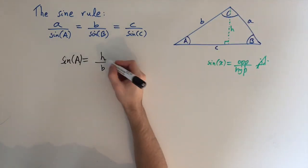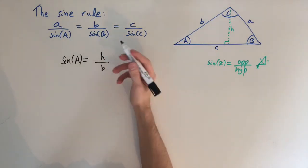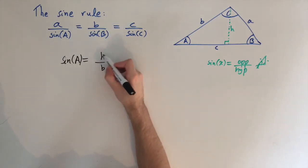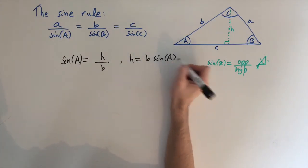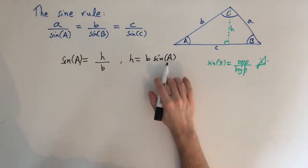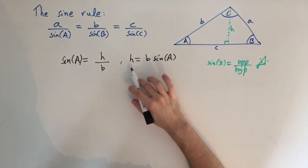So sine of a equals h over b, and we don't know what h is, but what we can do is we can rearrange to get it in terms of h. So I'm just going to bring up the b and we have h equals b times sine of a. And our plan is to find another expression for sine of b and then we can eliminate h.